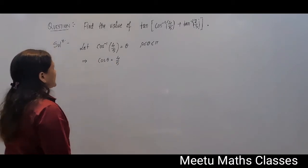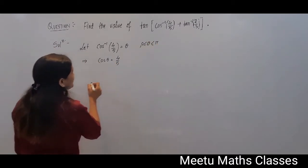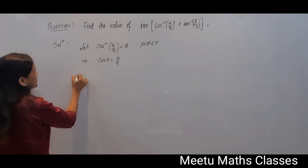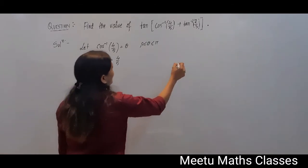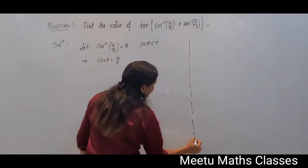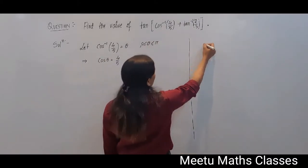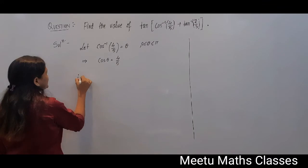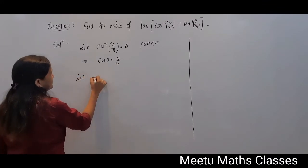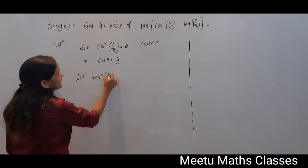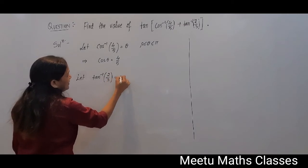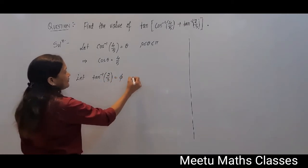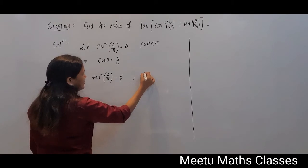What you are supposed to find out. Finally, you have to find let tan inverse of 2 by 3 as phi, where phi can be any real number.